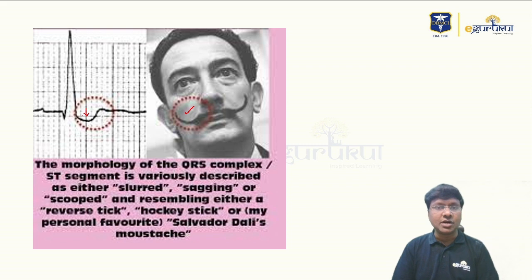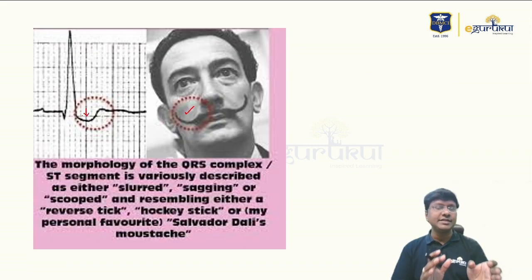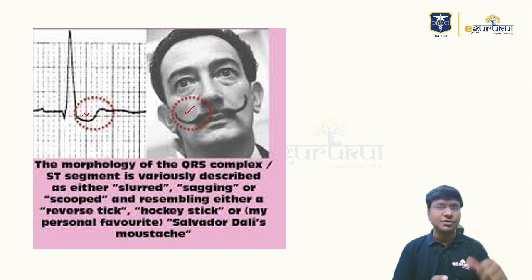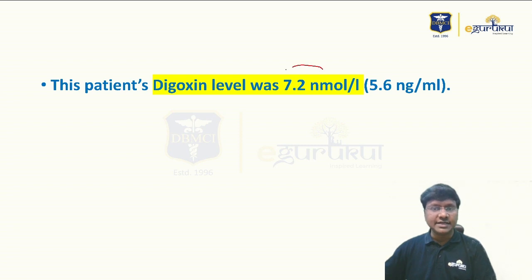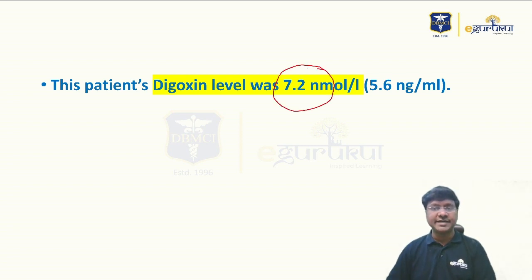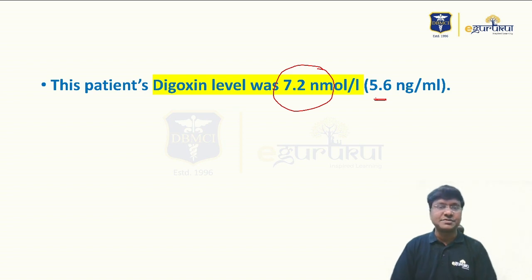This ECG pattern is classically described as the 'mustache of Salvador Dalí' — called the Salvador Dalí sign — because the shape of his mustache is similar to the depressed ST segment. It is also called the hockey stick appearance. Based on the clinical scenario, I checked the digoxin level, which was found to be 7.2 nanomoles per liter, equivalent to 5.6 nanograms per mL.